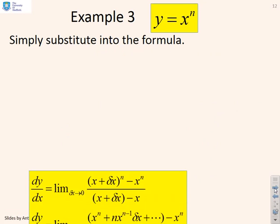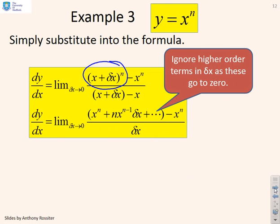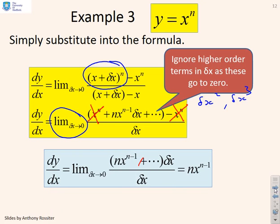A different example: what about y equals x to the n? We plug it into the limiting formula and get (x + delta x) to the power n. When expanded, all the remaining terms are of the form delta x squared or delta x cubed and so on, so when we apply the limit they're all negligible. Cancelling the x to the n terms and the delta x on top and bottom, you get left with n times x to the n minus 1. So the derivative of x to the n is n x to the n minus 1.